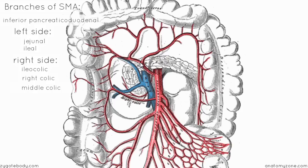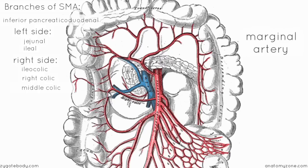These different vessels anastomose — the right colic, middle colic, and left colic arteries form a margin around the rim of the large intestine. The edges of the arcs of these anastomosing arteries are called the marginal artery. So you have this artery which lines the margin of the large intestine, and it is called the marginal artery.